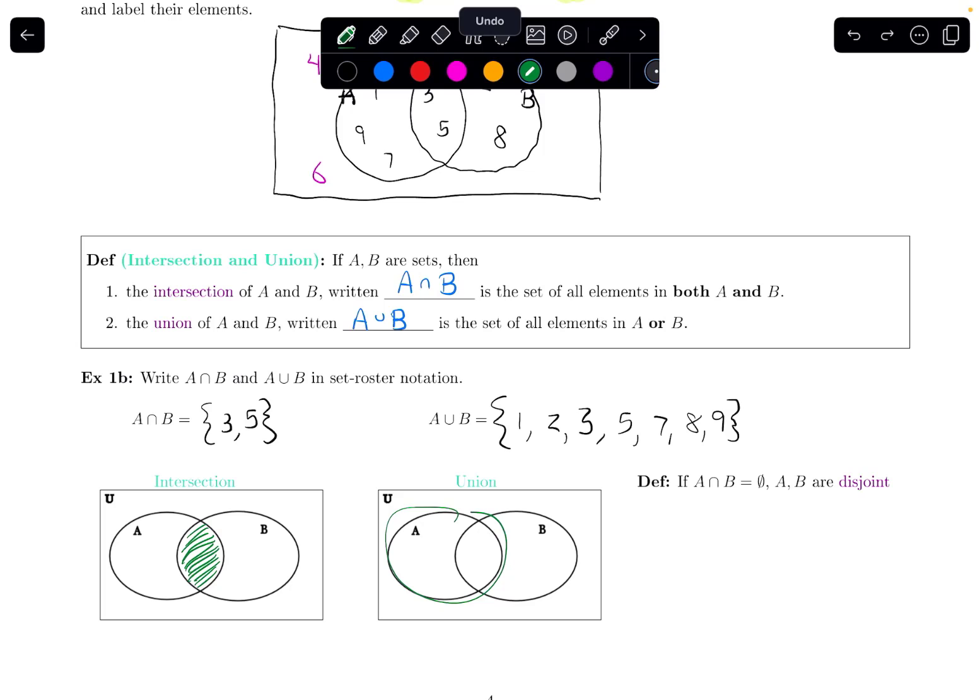And the union is anything that's in A or anything that's in B or anything to overlap. The union would be everything in either one of the circles, the whole thing gets shaded. And that's my union.